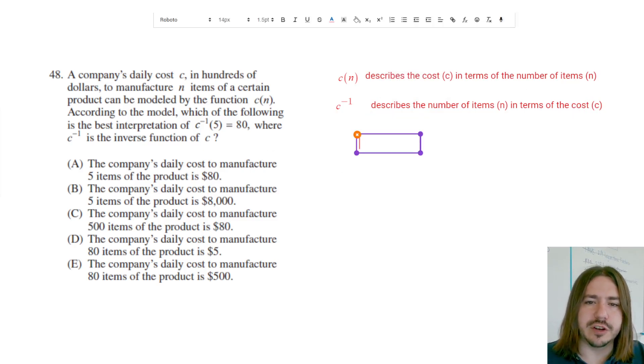For the original function, if I have C of n equals the cost, then that means that the inverse of C is gonna equal the number of items.